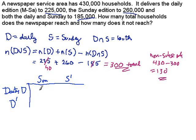Let's see what we have here. We know there's 185 subscribers to both daily and Sunday. We know the total number of daily subscribers was 225, so let's put a total out here, 225. And we saw the total number of Sunday subscribers was going to be 260. And the total of all the totals was 430,000.